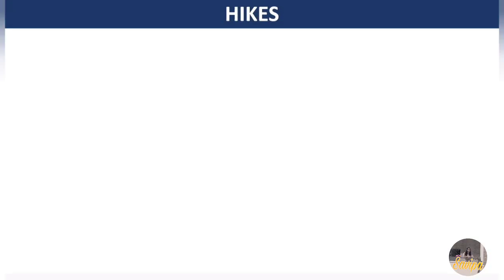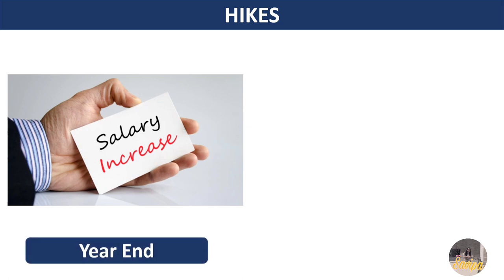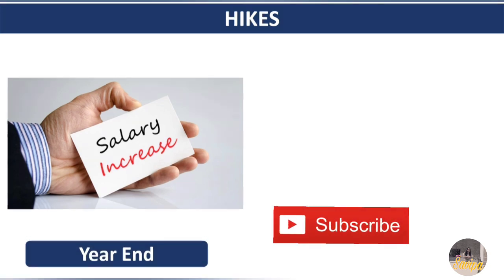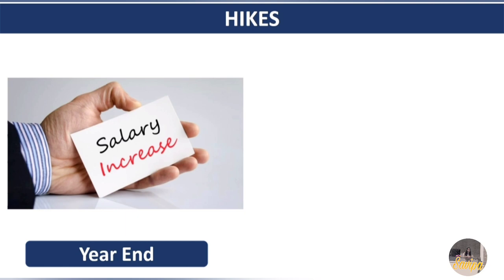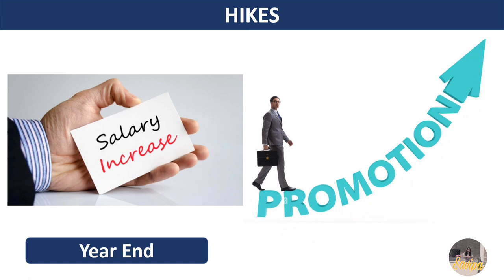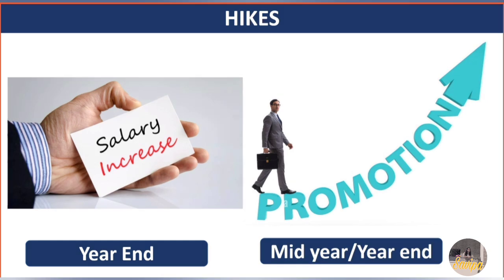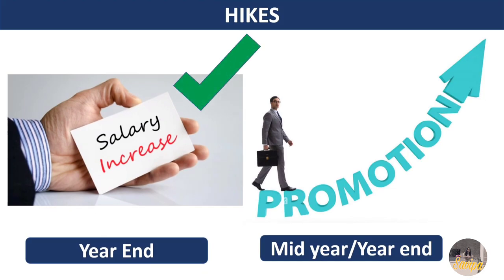Hikes are basically of two types. For the general category, it will be year-end — so every associate is eligible to get a yearly hike at year end. The second type is a promotional hike, which is for specific people eligible for promotion. This promotional hike can be in the mid-year or at year end. In this video, I'm going to discuss the general category hike which every associate gets at year end.